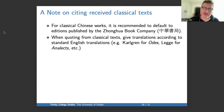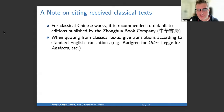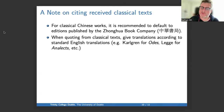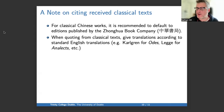A note on citing received classical texts: it's seen as good practice to default to consulting the editions published by the Zhonghua Book Company. You might have a reason not to do that — you can't get your hands on it, or there's a particular version relevant to your argument — but as a default, try to cite things from the editions published by the Zhonghua Book Company. Also when quoting from classical texts, don't translate them yourself unless you really need to. Instead, default to using standard English translations — for example, Karlgren's translation of the Odes or Legge's translation of the Analects. If you can't find the standard English version, you can ask me for help.